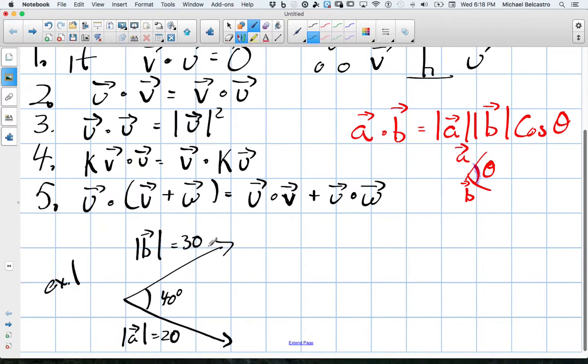The absolute value or the magnitude of vector b times the magnitude of vector a. So if we're doing a dot b, we're looking at magnitude of a. Well, magnitude of a is 20, so 20 times 30.